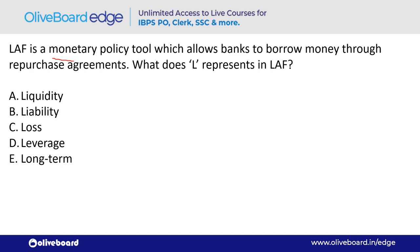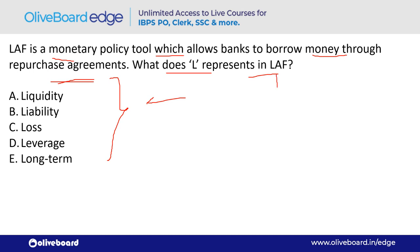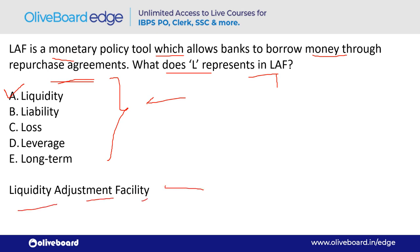LAF is a monetary policy tool which allows banks to borrow money through repurchase agreements. What does 'L' represent in LAF? LAF stands for Liquidity Adjustment Facility — option A. Under LAF, there are two rates: Repo Rate and Reverse Repo Rate.